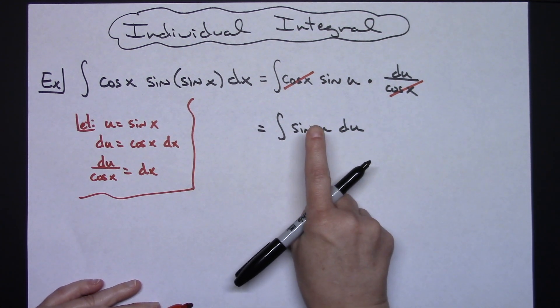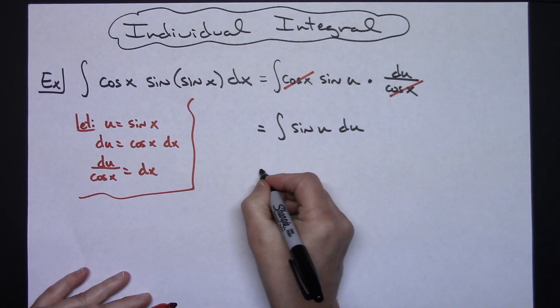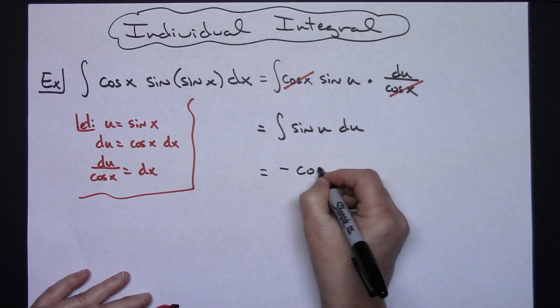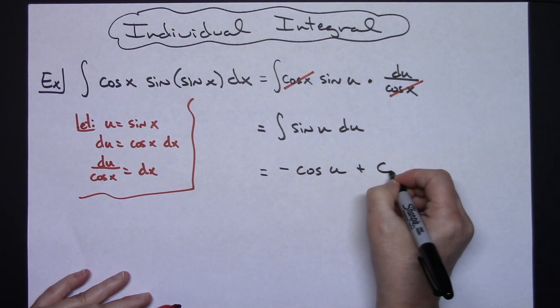That's a straightforward integral that hopefully at this point you have memorized. That'll be a negative cosine u plus c.